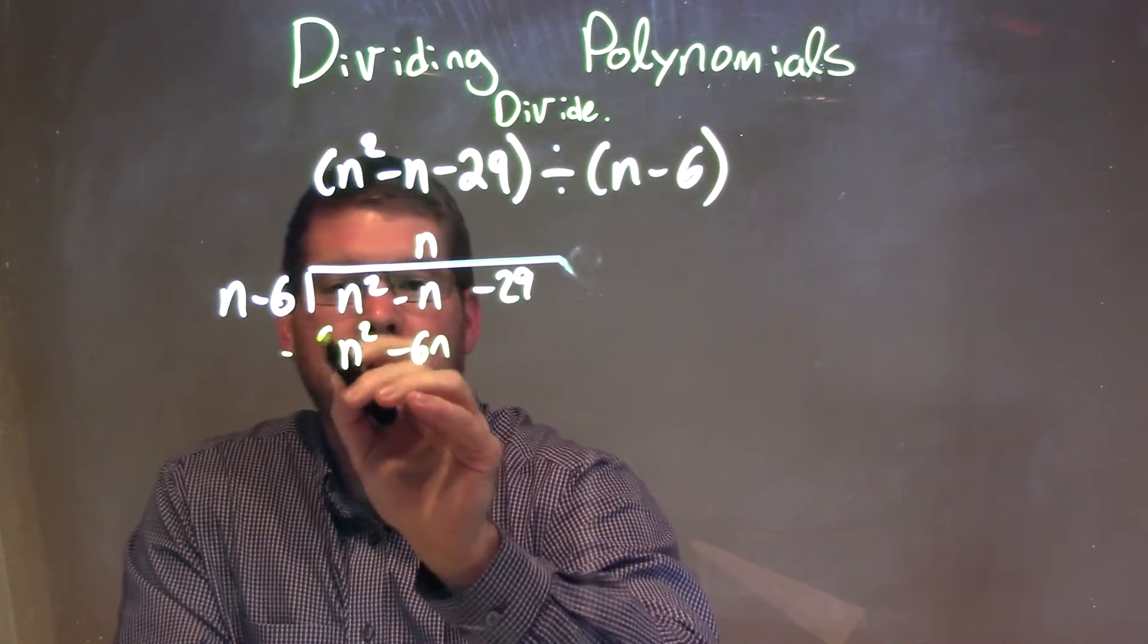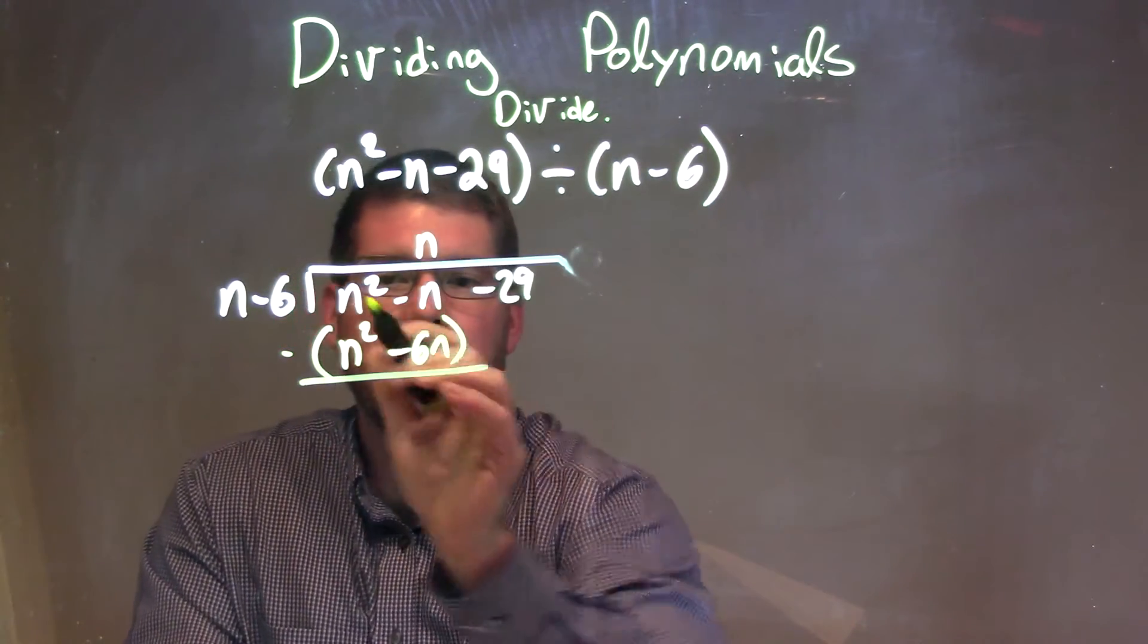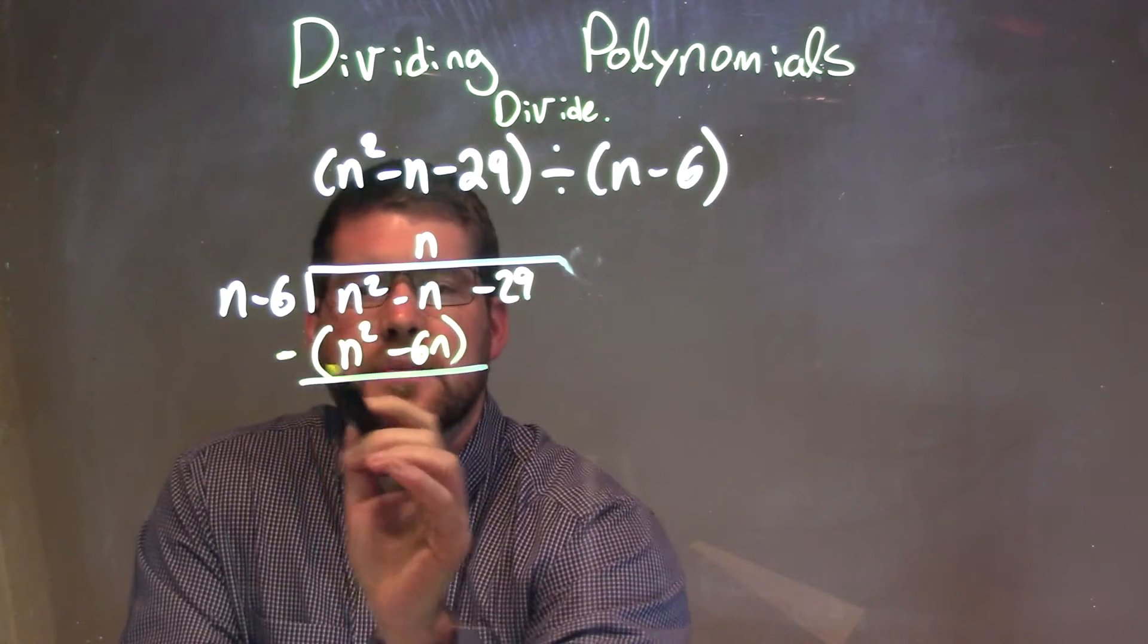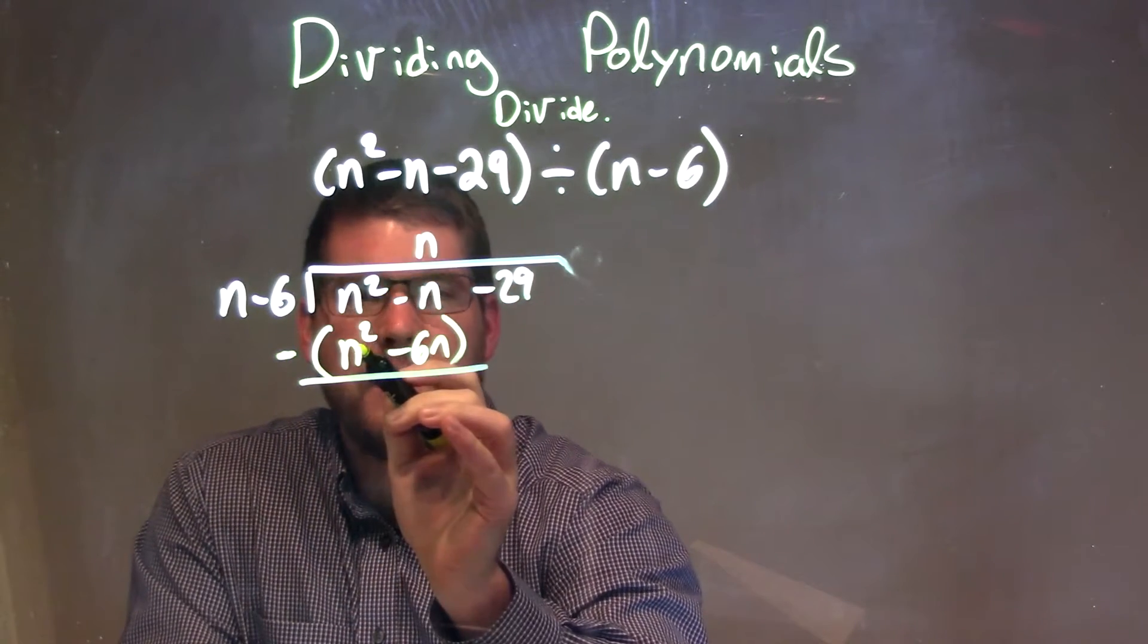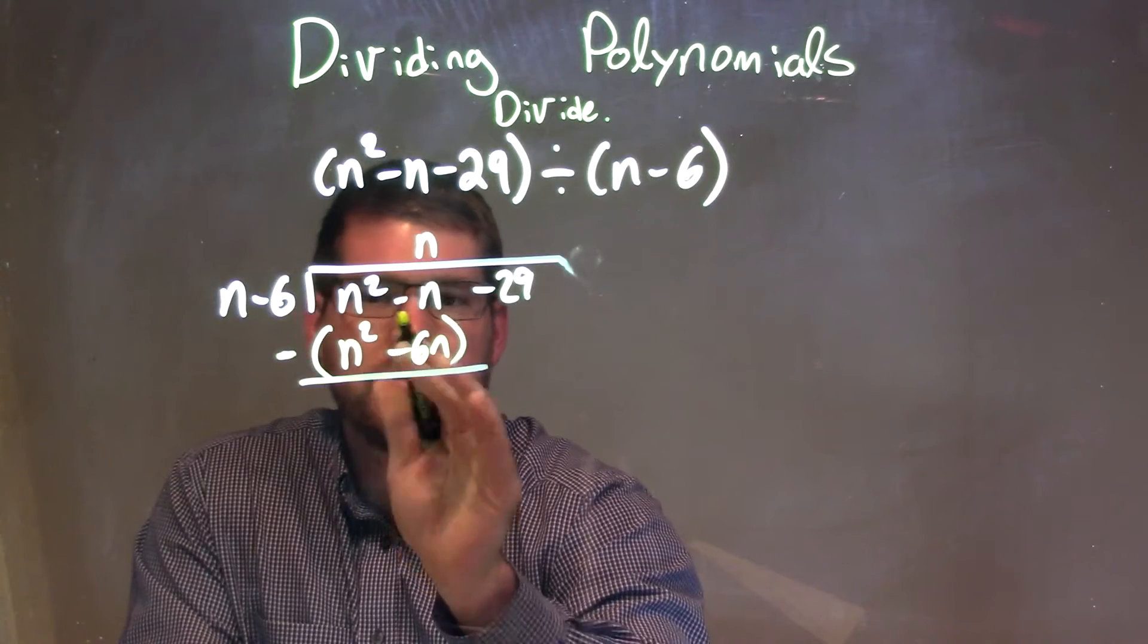Then we have to subtract these two. I'm subtracting the whole part, right? So when I subtract that, n squared minus n squared is just zero. Great, eliminates that.